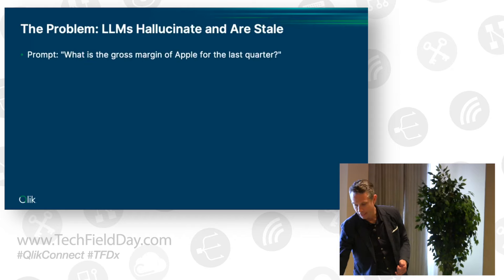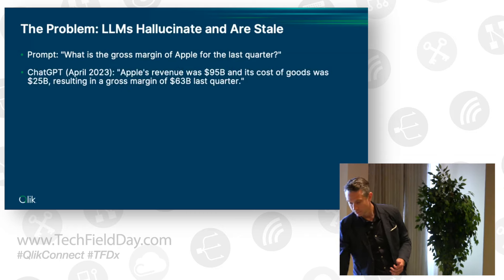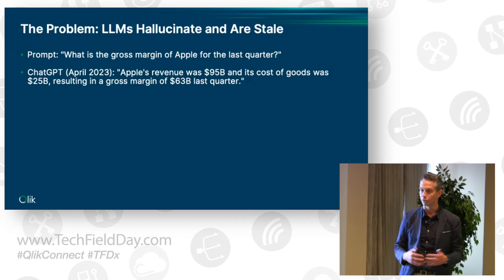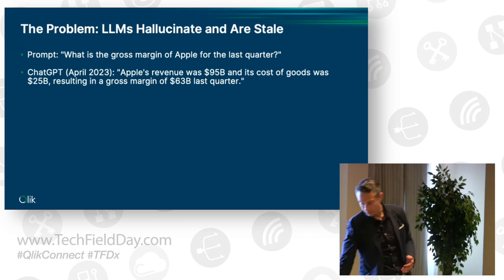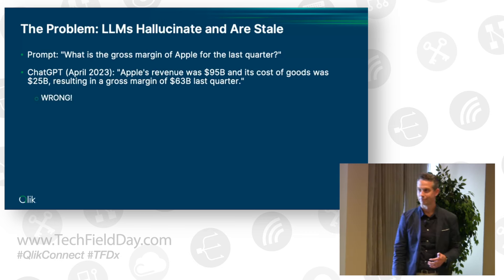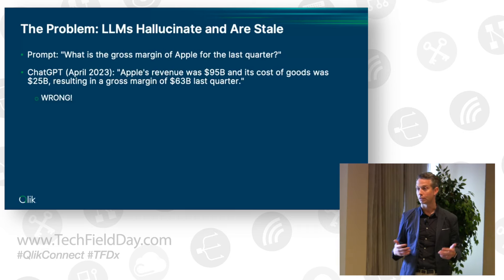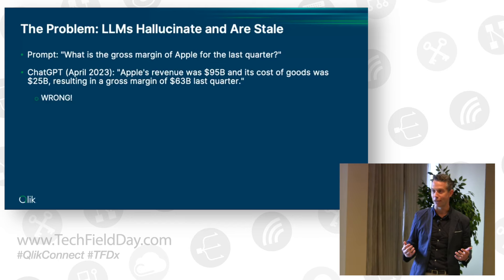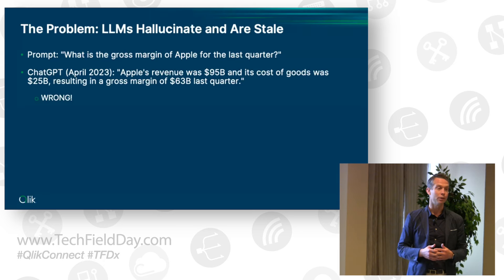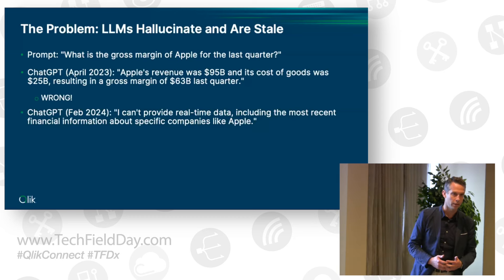The problem with large language models is that they hallucinate and they're stale. For example, if we were to ask ChatGPT what is the gross margin of Apple for the last quarter, in April of 2023, ChatGPT would say Apple's revenue was $95 billion, its cost of goods was $25 billion, resulting in a gross margin of $63 billion. This answer is absolutely incorrect — not even close. Imagine getting this answer with no way to confirm it. At that time, 10 to 20% of answers were just completely made up.